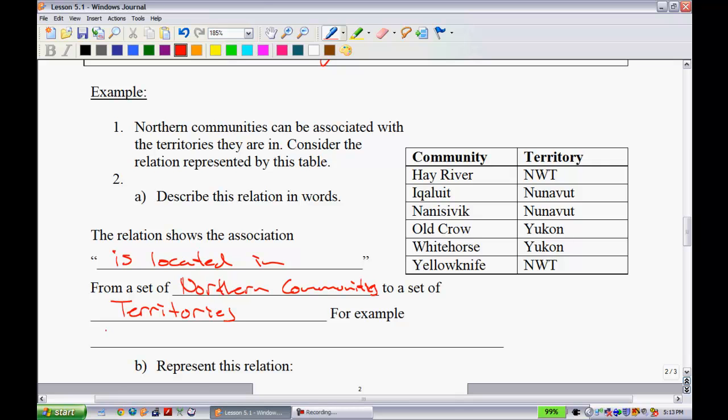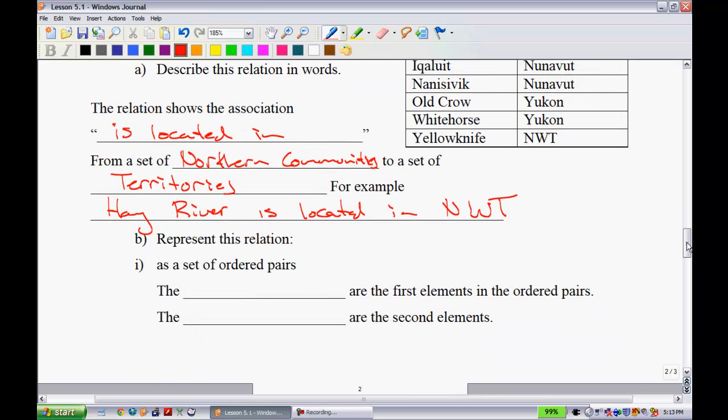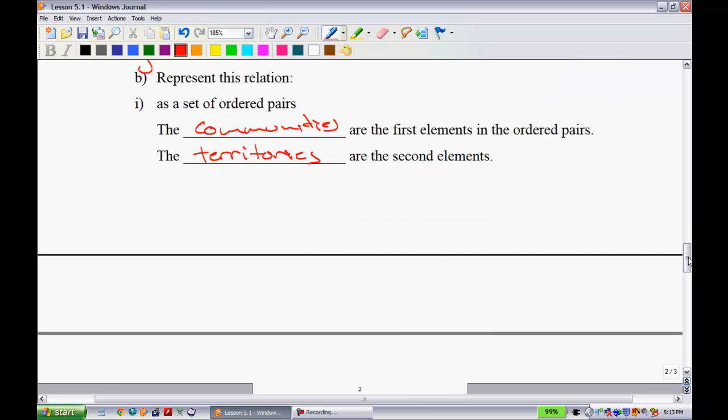So, we have northern communities all mapping onto territories. For example, we would say Hay River is located in the Northwest Territories. Now, they want you to represent this relation a couple different ways. We could represent this relationship as a set of ordered pairs. The communities would be the first member or first element in the ordered pair and the second would be the territories.